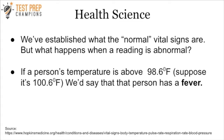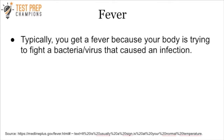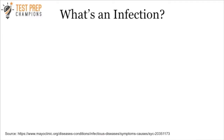We've established what the normal vital signs are, but what happens when a reading is abnormal? If a person's temperature is above 98.6 — maybe 106 degrees or something like that — we'd say that person has a fever. Typically you get a fever because your body is trying to fight a bacteria or virus that caused an infection. You might be wondering: what's an infection?